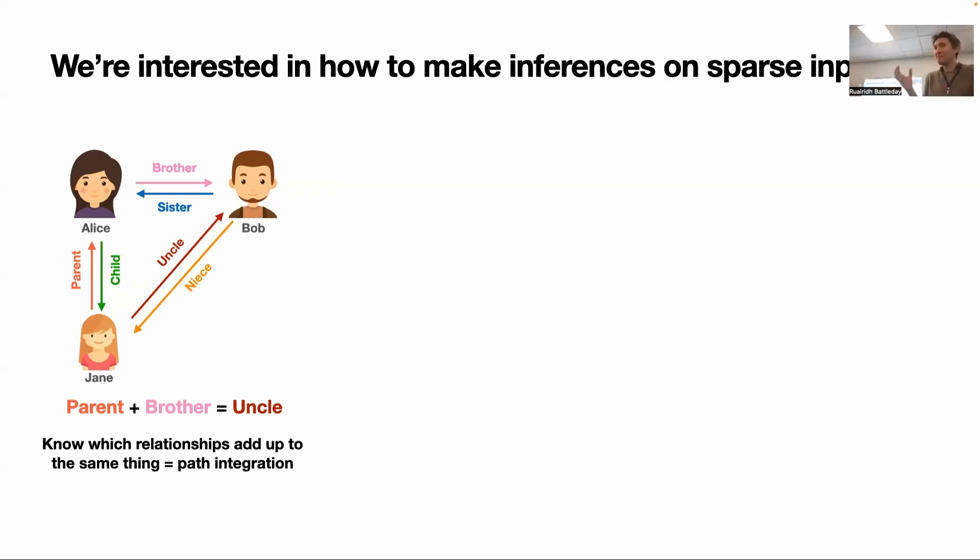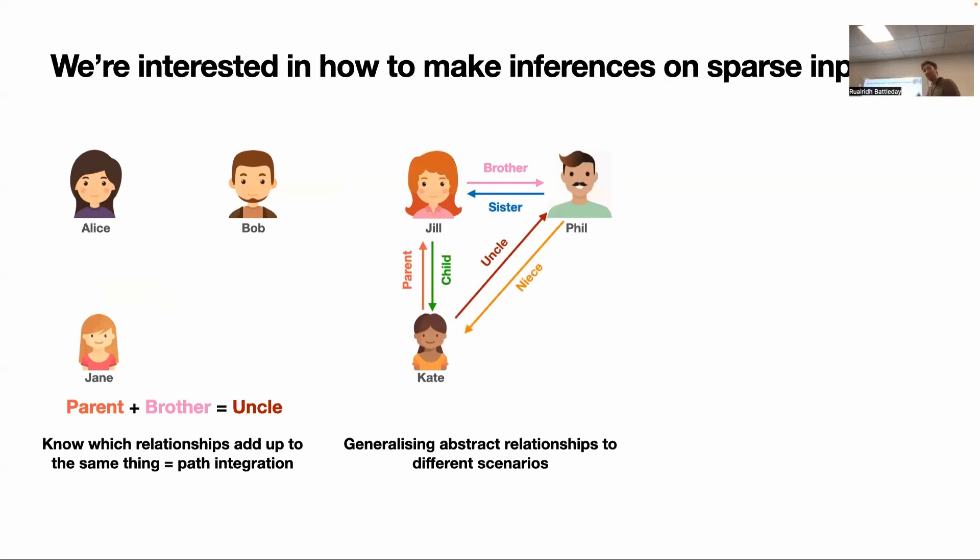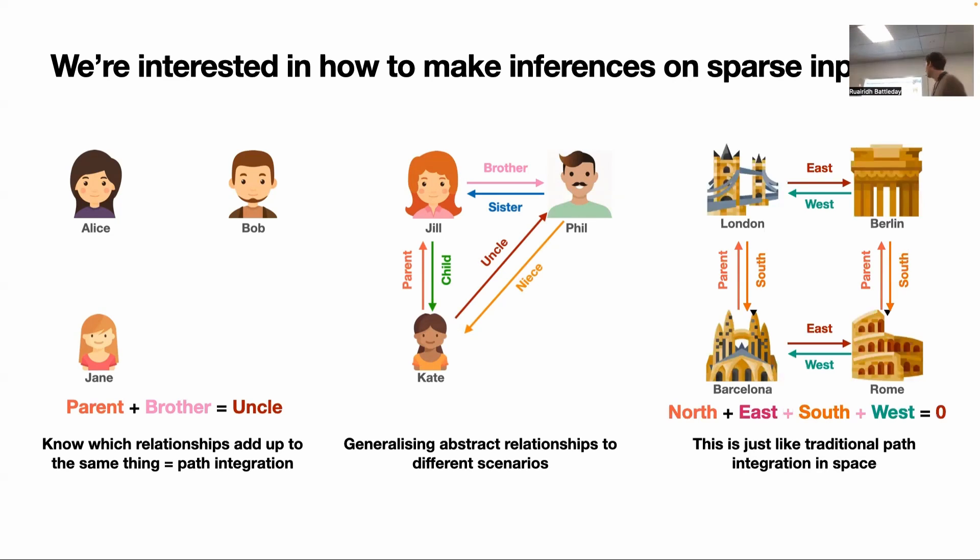This is really kind of like taking a shortcut in some relational space. Of course, we don't just want to understand one family. What we really want to do is take this relational understanding we have and be able to transfer that to a new family, so we can understand this new family as fast as possible and make inferences about who's related to who. This problem is not just bespoke to people and their families. It's really a problem that you and I do every day in understanding space. For example, we go around in a loop in this building, we know we're going to be back in the same place even though we've never done it.